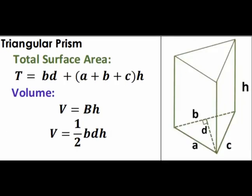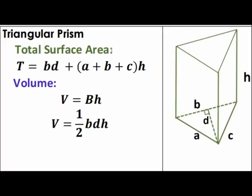Lastly, a triangular prism. For the total surface area of a triangular prism, we need to add the areas of the two triangular bases to the areas of the three rectangular faces. In this illustration, A, B, and C are the sides of the triangular base and H is the height of the prism. The area of the base is 1/2 times BD, where D is the height of this triangular base, and we have two of them, so that contributes BD.